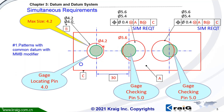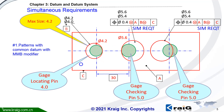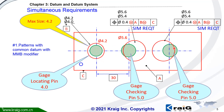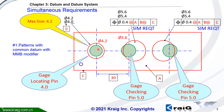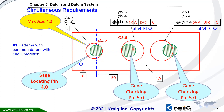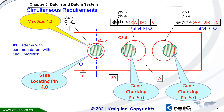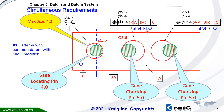This is why simultaneous requirement is the default, and this exactly matches the actual assembly function. If we want to assemble these parts with three bolts, all three bolts need to mount inside. So we need to use simultaneous requirements as the default.